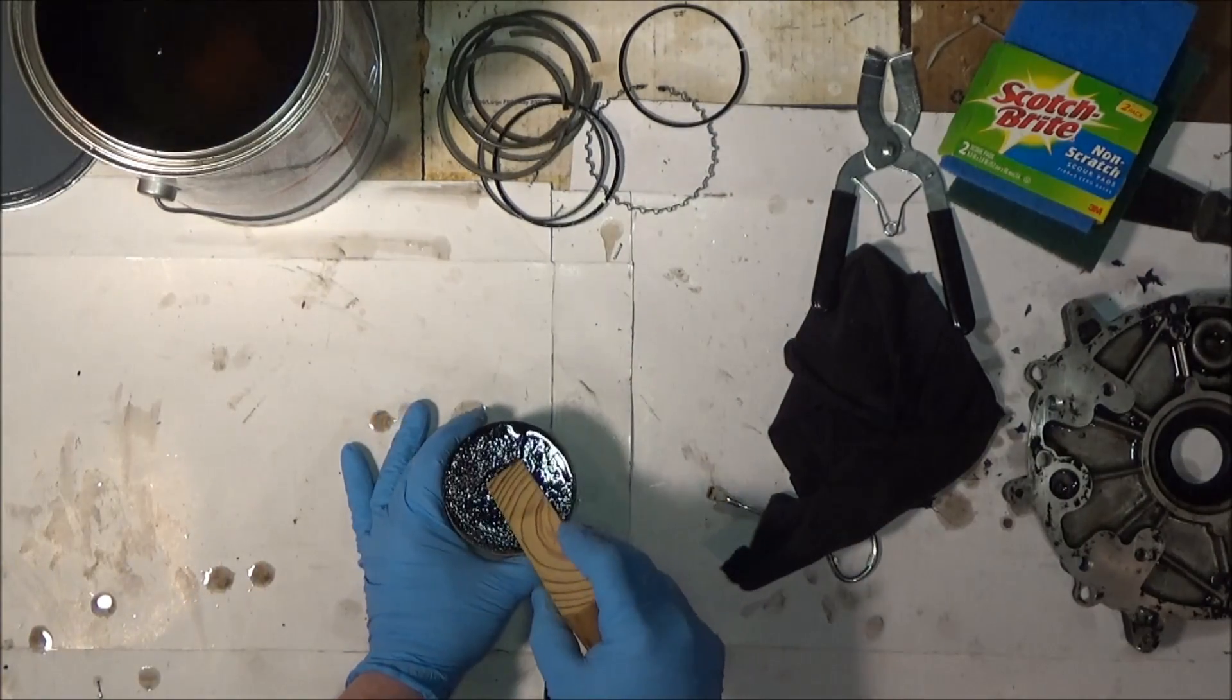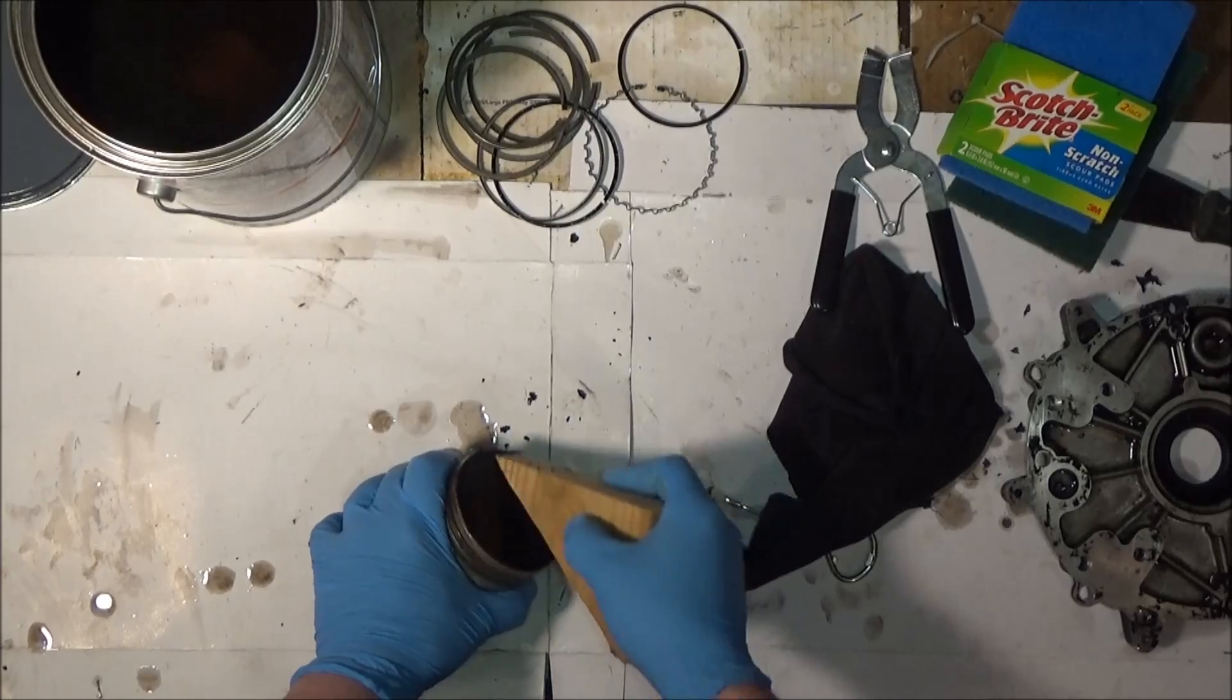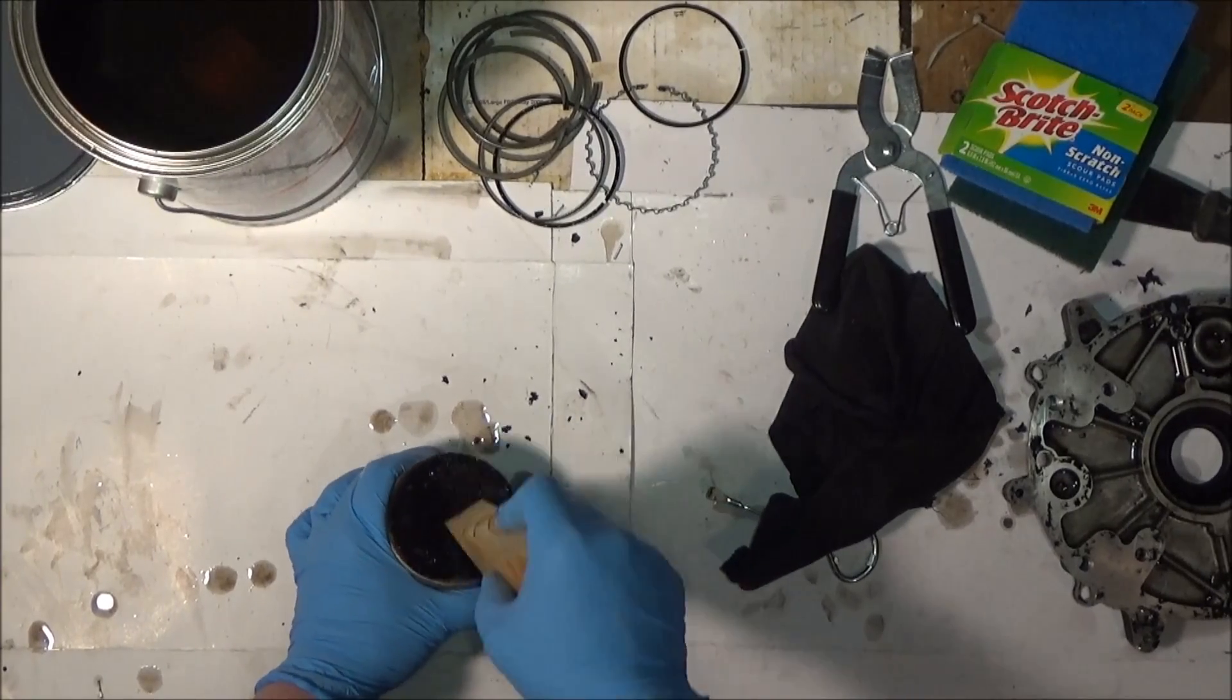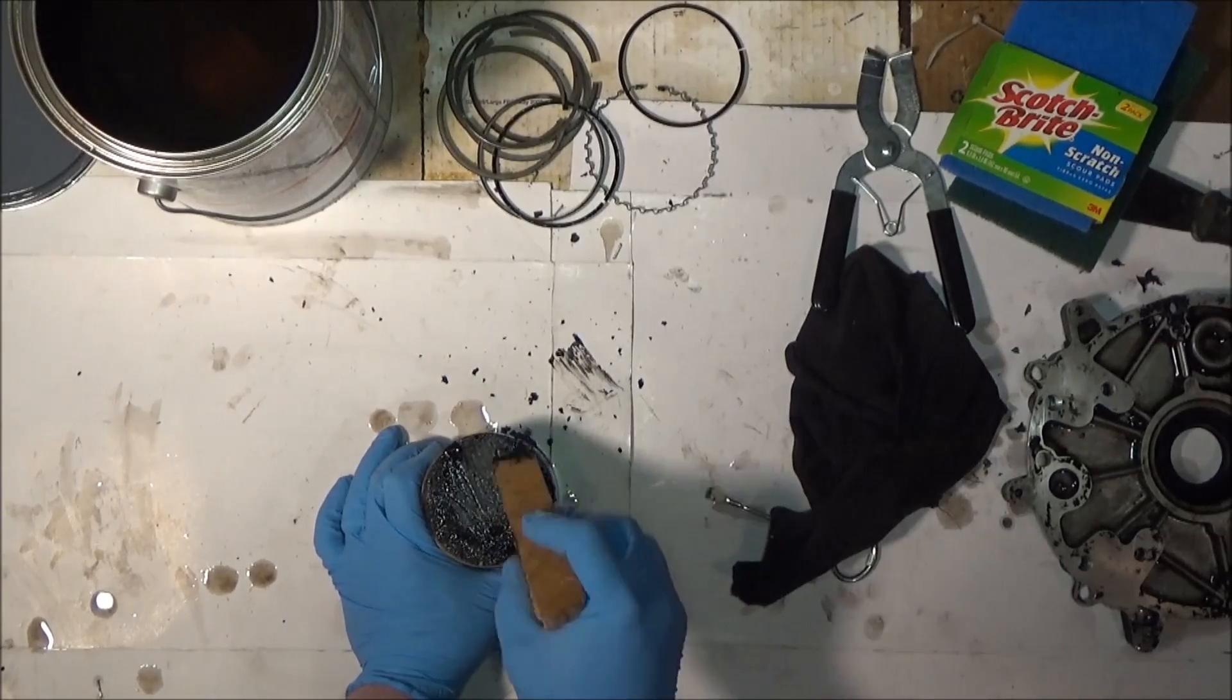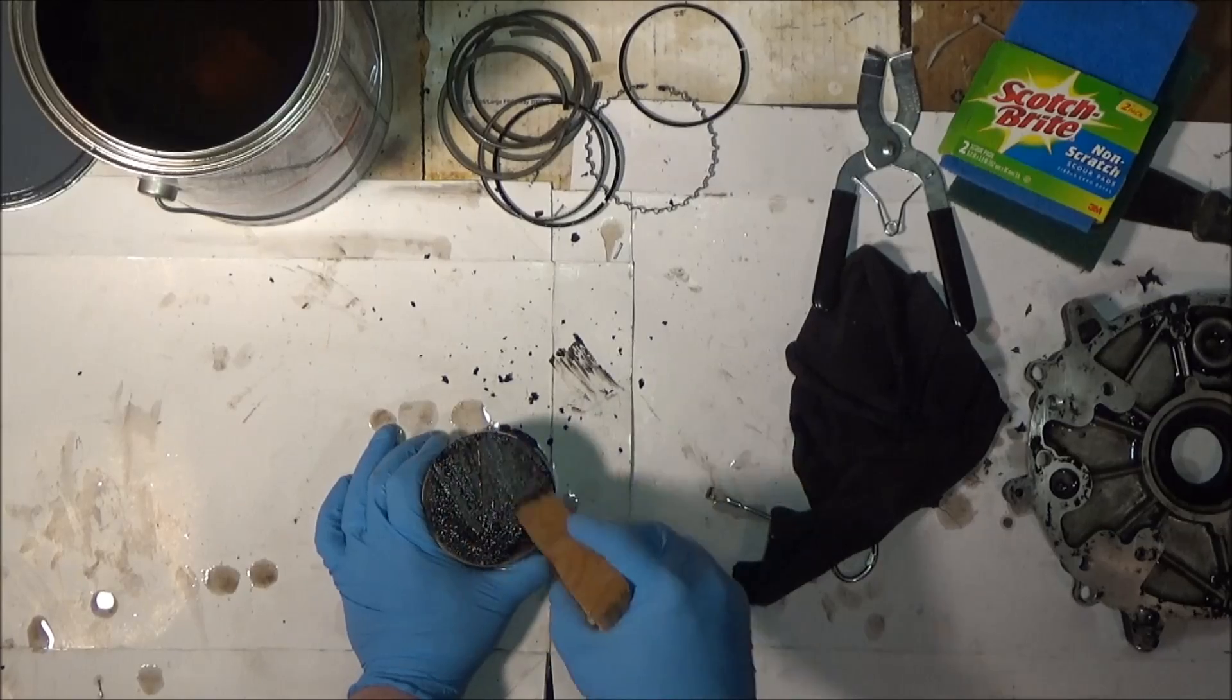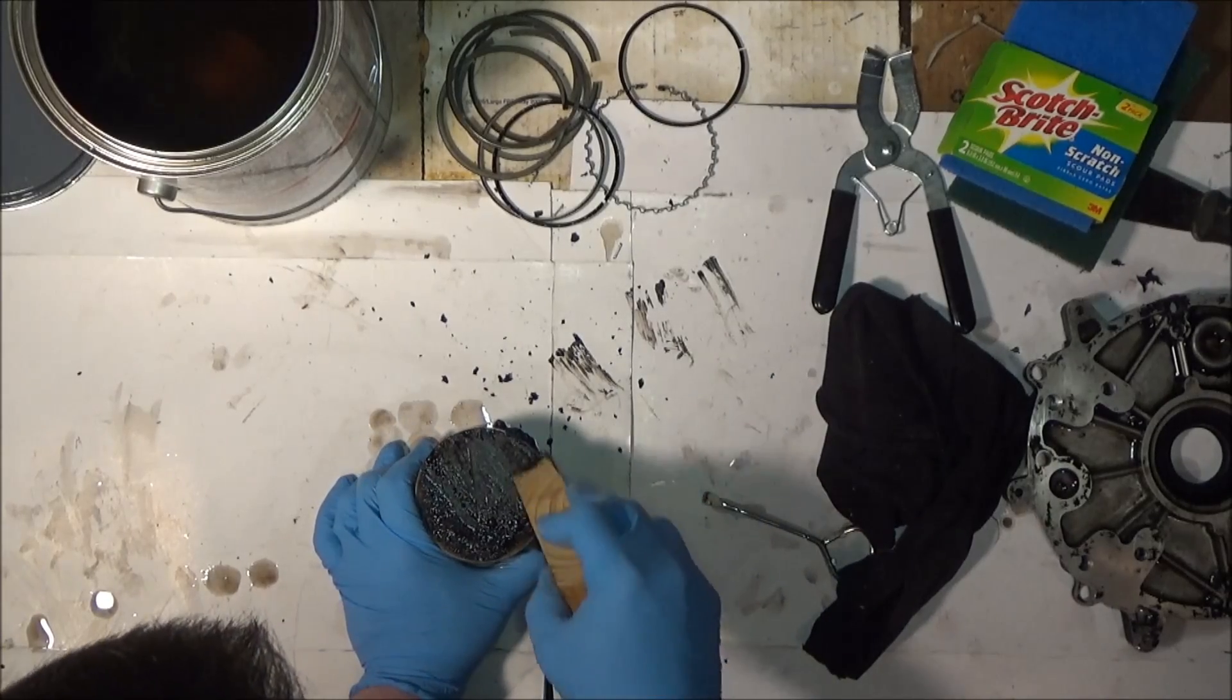I've got this block of wood now. I can try to knock some of that carbon off. It's definitely softened up quite a bit. You really don't want to use anything more than a block of wood on the top of this piston for sure.